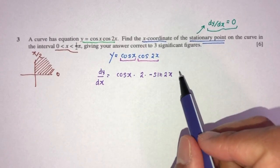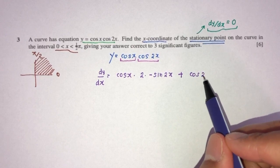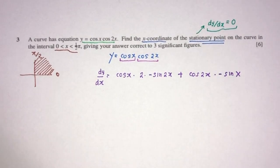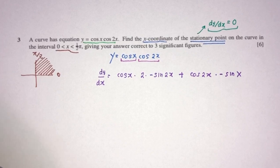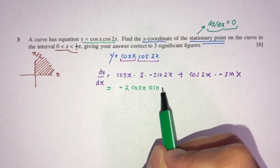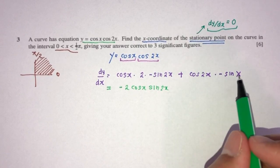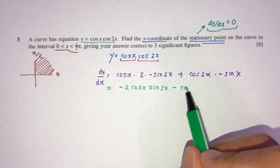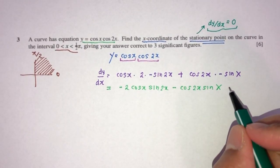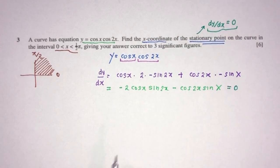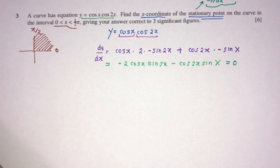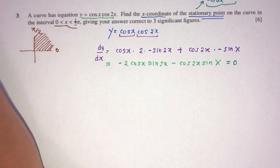Now simplify. You will have minus 2 cos x times sine 2x, and minus cos 2x times sine x. To find the values of x, we have to equate that to 0, because dy/dx equals 0 at a stationary point. Now let's try to rearrange. When doing a question in relation to trigonometry, I recommend factorizing instead of trying to cancel out the values.